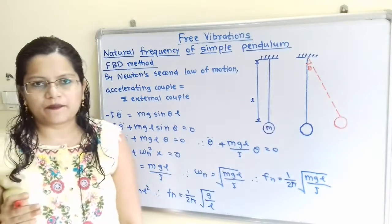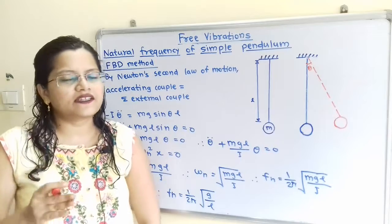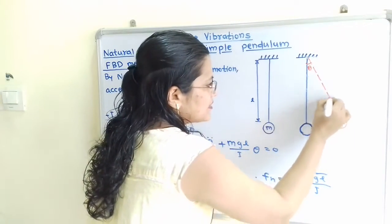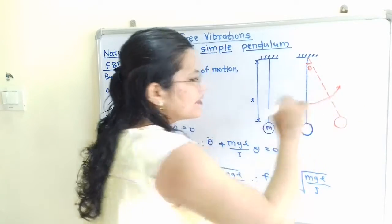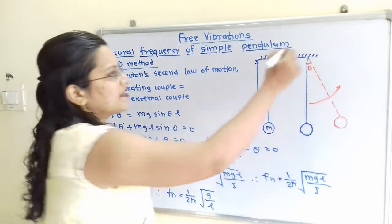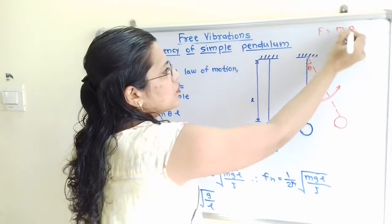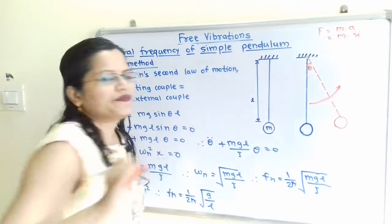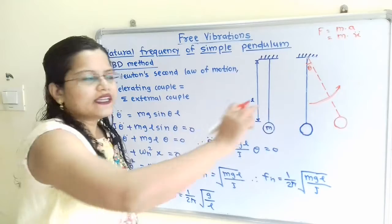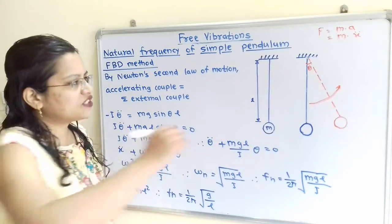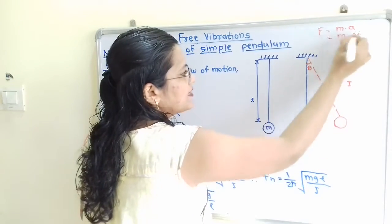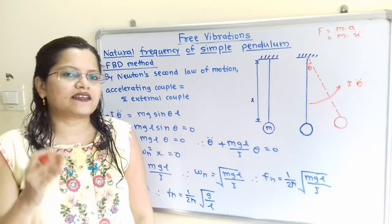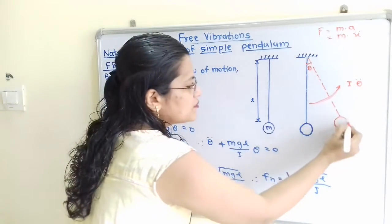In the same direction of displacement, an accelerating torque is developed in the anti-clockwise direction. In a linear system, the accelerating force F equals M times A, or M times x-double-dot in terms of displacement. Similarly, for the accelerating torque, instead of mass M we write the mass moment of inertia I, and instead of linear displacement x we write angular displacement theta-double-dot. This is the accelerating torque, also known as the accelerating couple.